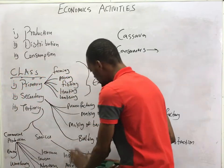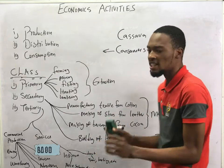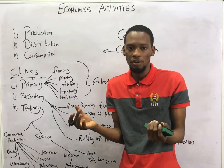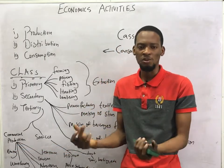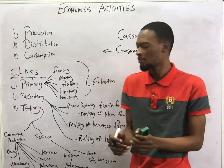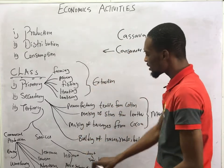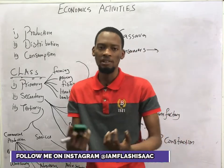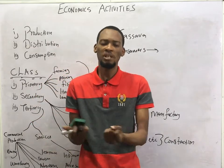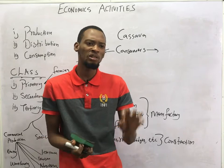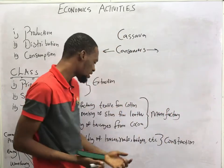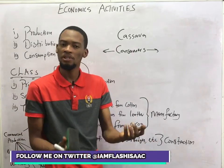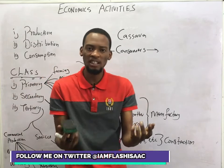A service can be direct or indirect. Direct services are the ones you pay for directly — for example, when you take a taxi or go to a barber, someone helps you and you pay them directly. Indirect services are those you enjoy but do not pay for directly. For example, at university you pay school fees, but you don't pay your lecturers, police, or soldiers directly. Those services you enjoy without direct payment are indirect services.